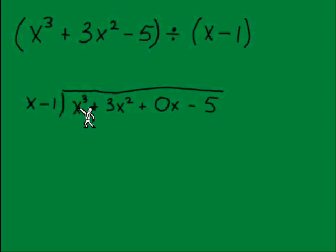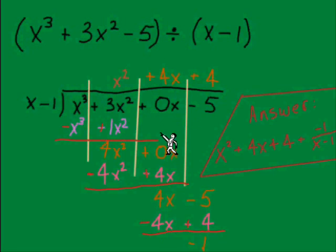Okay, so hopefully you've taken a few minutes to work that problem. First of all in my setup, I've put a placeholder here for the x term. This dividend had x³ and x², but what was missing was the regular x term. It went right from 3x² to negative 5, so I have a 0x as my placeholder for terms that are going to have just that regular x.